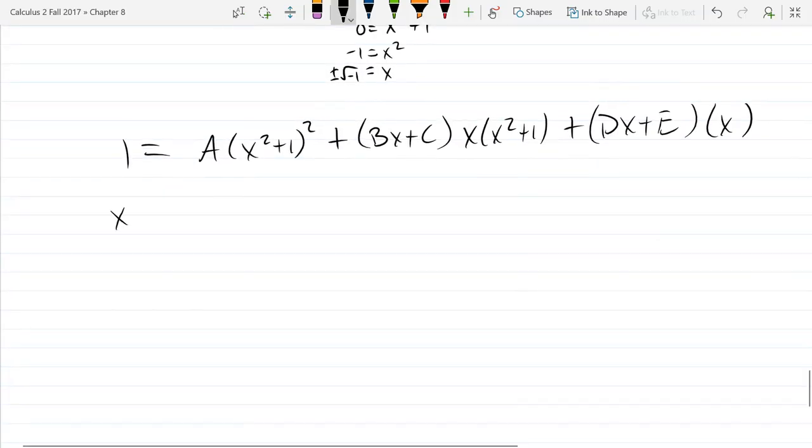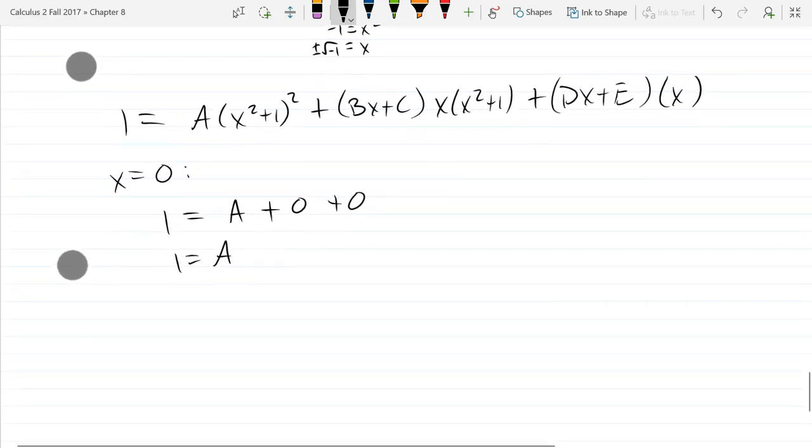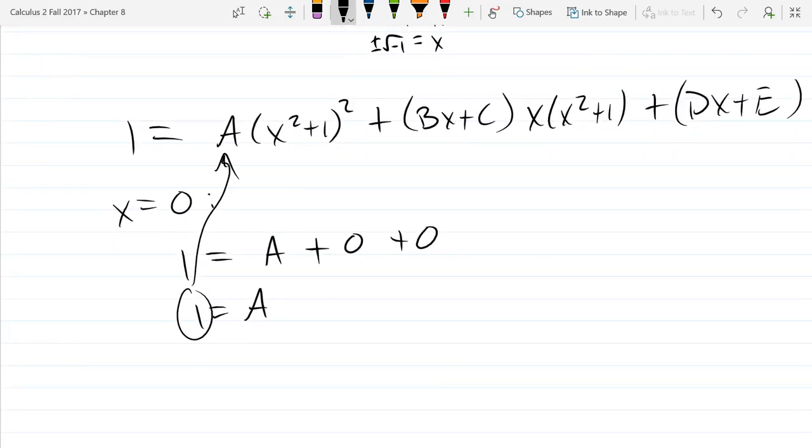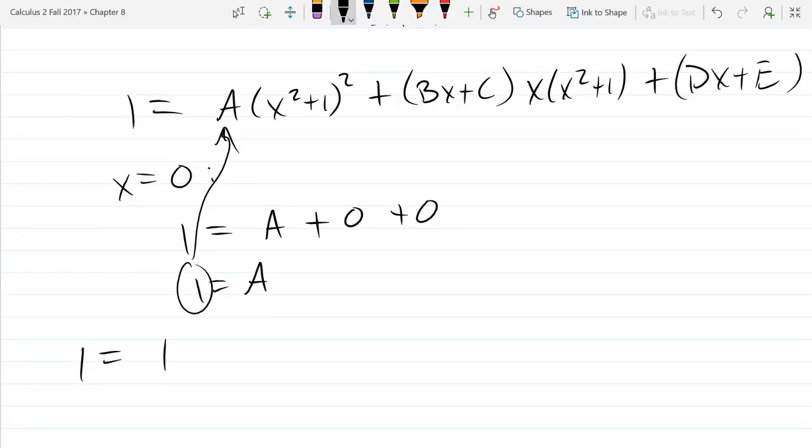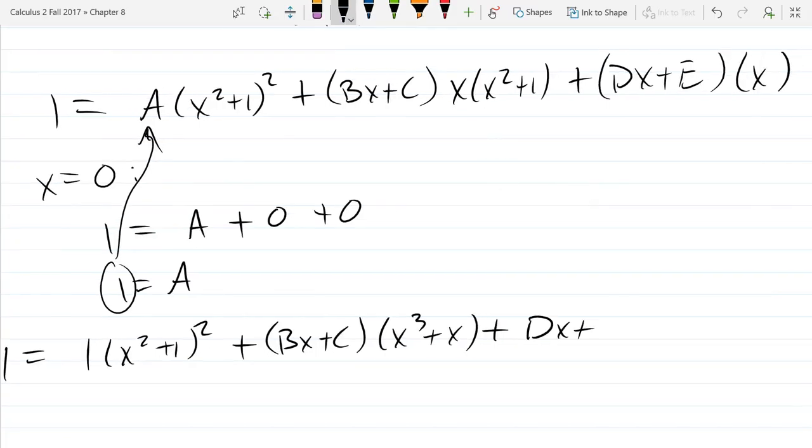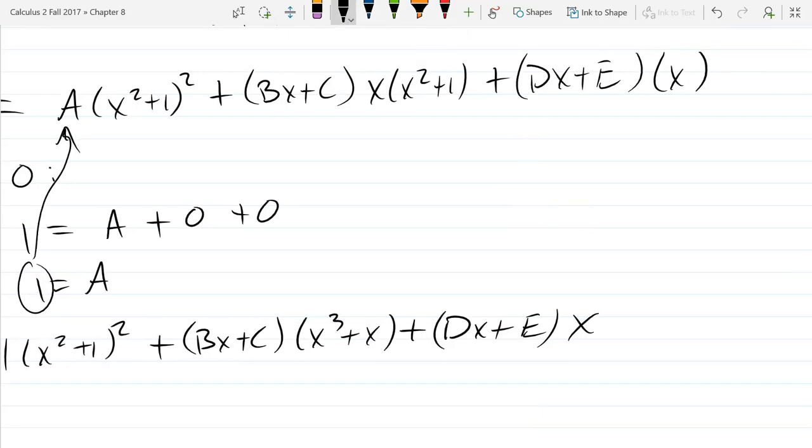All right, so let's do x equals zero and plug that in. We got a plus zero plus zero, so one equals a. That was pretty easy. All right, we got a. Let's plug in that value in for a. We'll rewrite this. So one equals one x squared plus one squared plus bx plus c. I'm going to distribute that x.